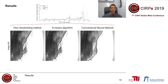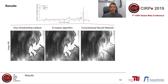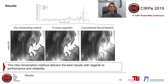Looking at distinct stages of mold filling — image 61 corresponds to roughly half filling — we see that the fiber front is detected well by all methods. However, looking at image 89, which corresponds to an almost fully filled mold, the OTSU thresholding method and the k-means algorithm achieve good results, but the convolutional neural network fails to detect the fjord-like structure inside the mold. Therefore, we can summarize that the OTSU binarization method delivers the best results with regards to performance and reliability.